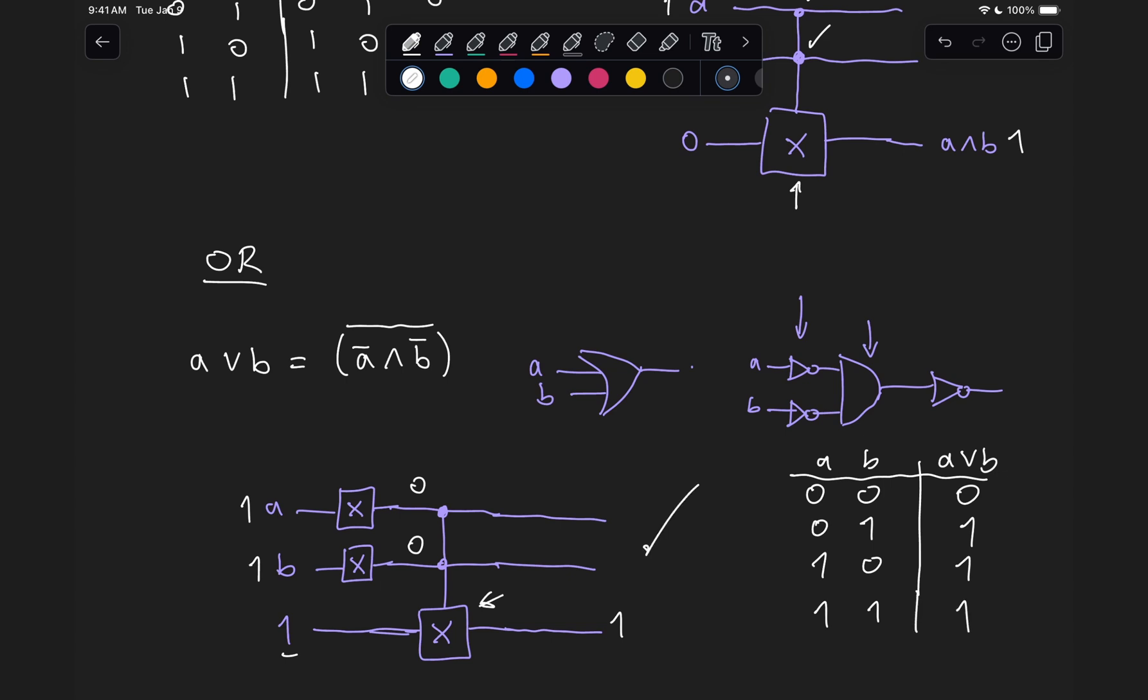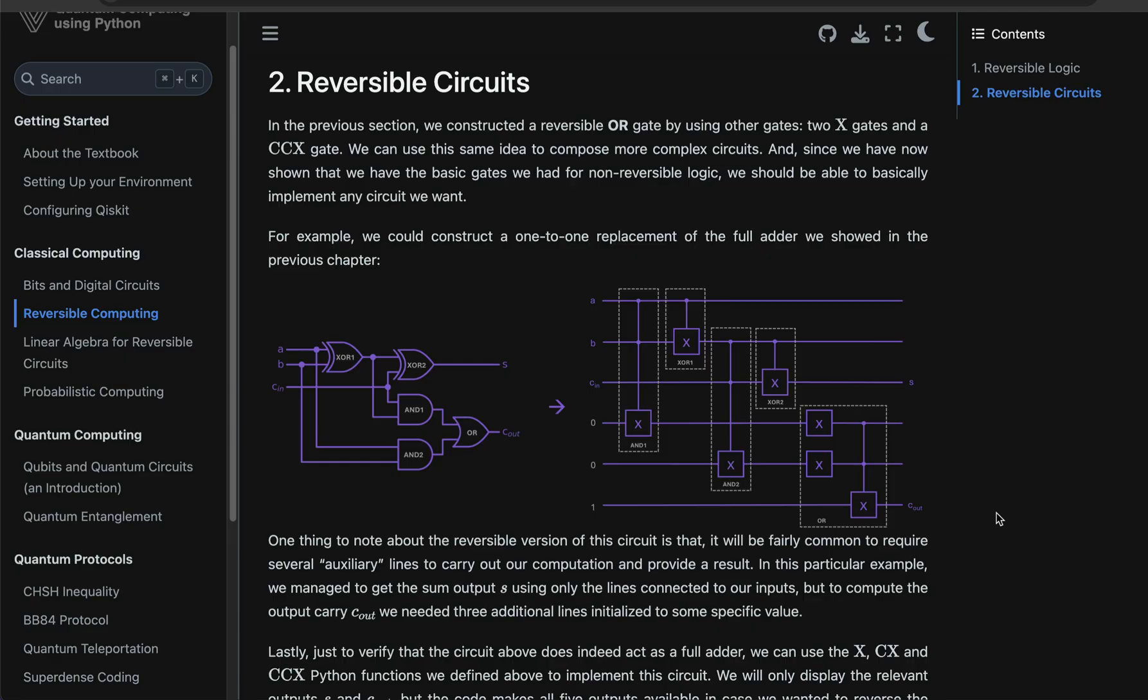So now we have all the building blocks that we need to construct any type of logical circuit using reversible gates. So we can generalize this procedure that we just followed to implement any circuit that we want. For example, here we can see how we can map the conventional circuit used for an adder to one that is implemented using reversible logic. Now, there might be ways to simplify this circuit and make it more efficient. But the idea is that there is a way to always map a non-reversible circuit into this paradigm of reversible logic.